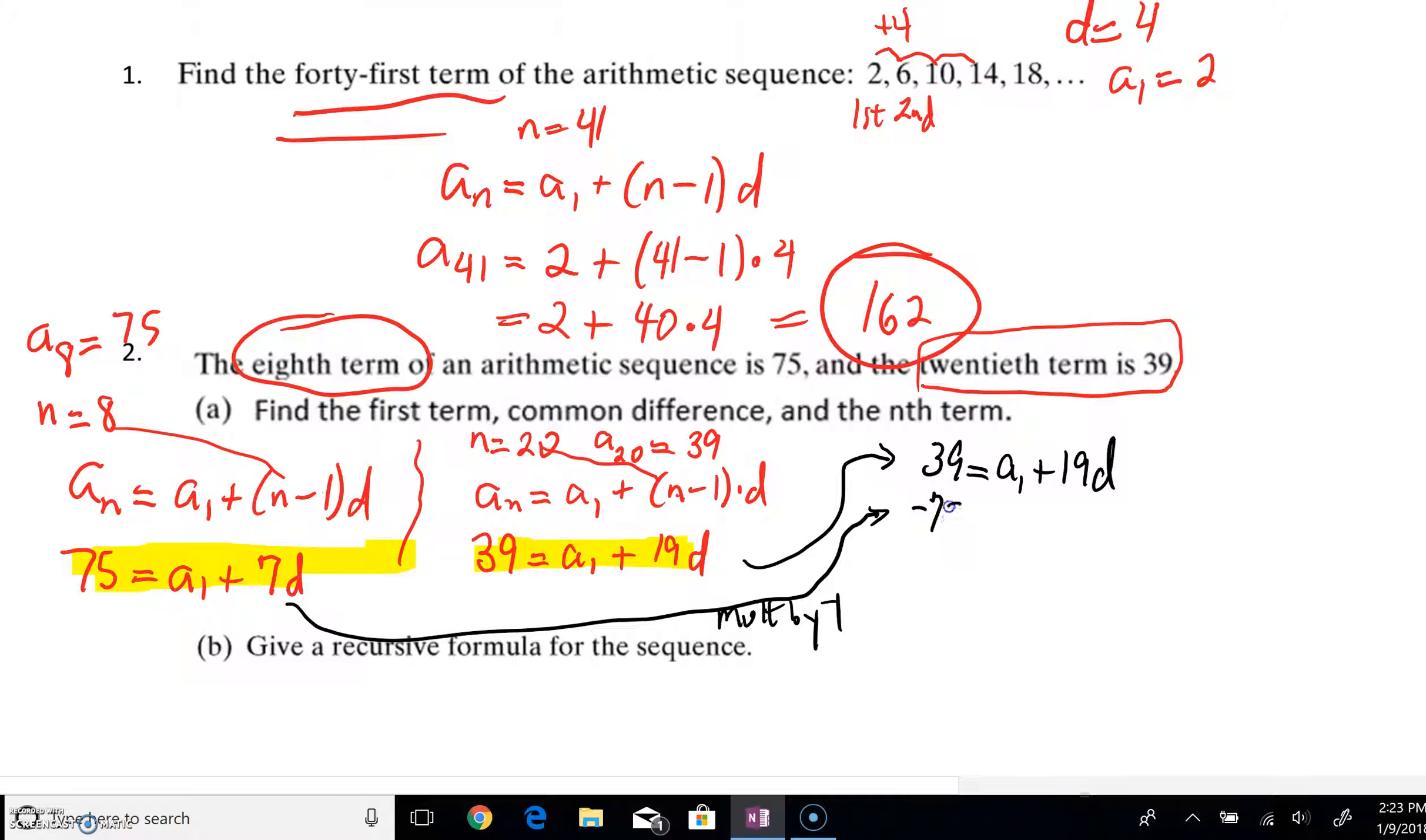And we'd get negative 75, negative a sub 1, and then plus a negative 7d or a minus 7d. The a sub 1s are going to cancel. A 19d minus 7d would be 12d. And then negative 75 minus 39 should get you negative 36. So at this point, what we can do is just divide by a 12 and very quickly see that d is equal to negative 3.